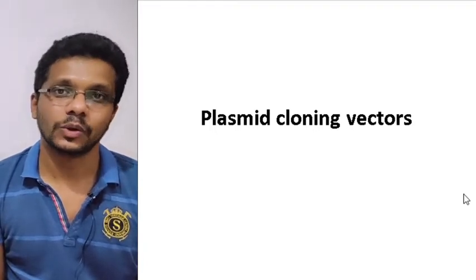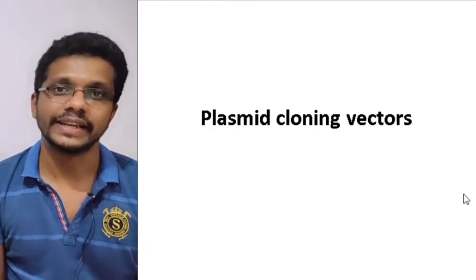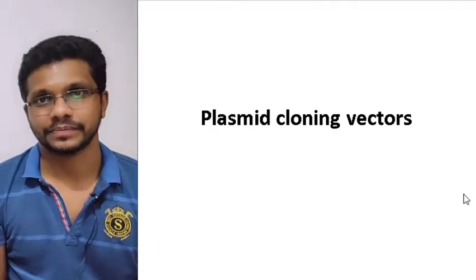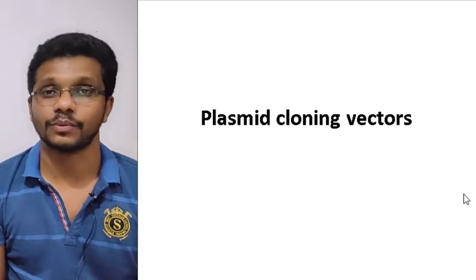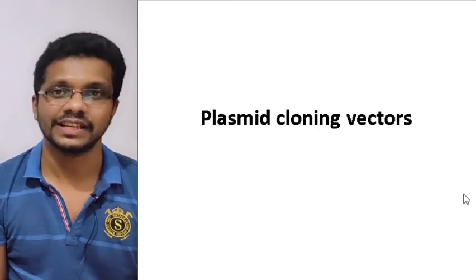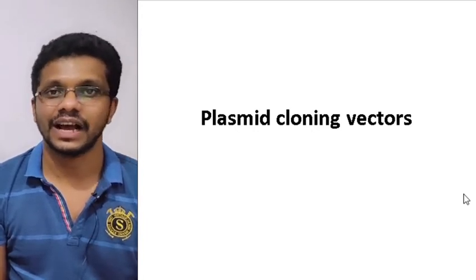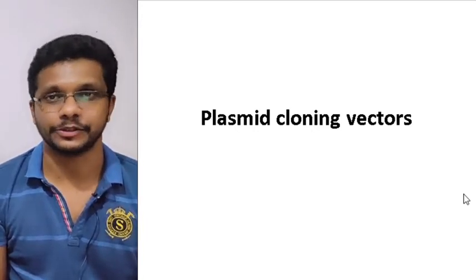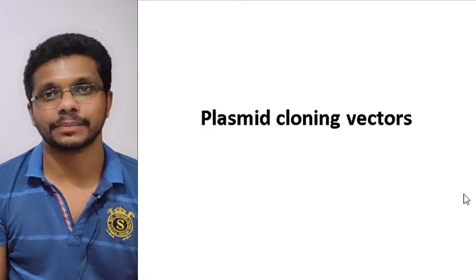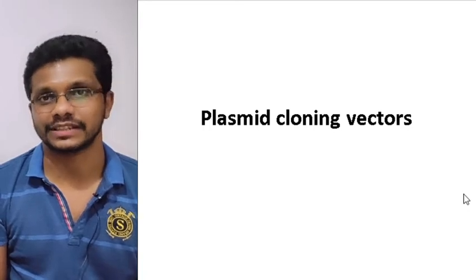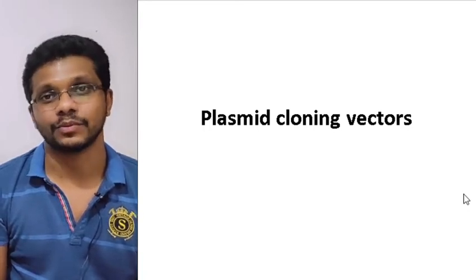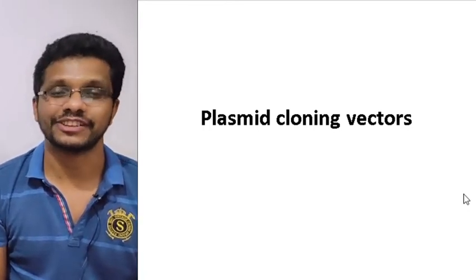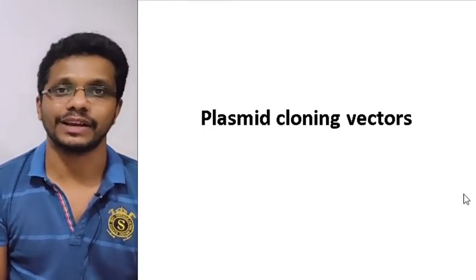Hello. Plasmid cloning vectors are widely used in recombinant DNA technology. They are the simplest form of vectors. In this session, I am going to talk about PBR322, which is a plasmid cloning vector and one of the first perfect vectors we have ever used.